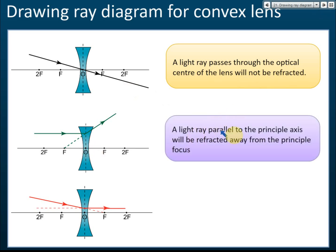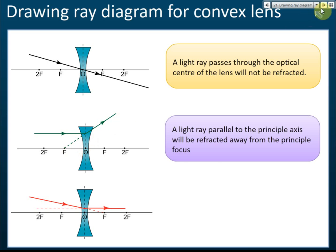Rule number two: if the light ray is parallel to the principal axis, it will be refracted away from the principal focus. For a convex lens, the ray is refracted towards the principal focus, but for a concave lens it is refracted so it looks like it is coming out from the principal focus.